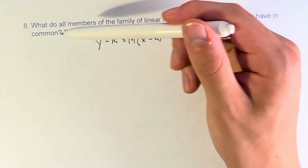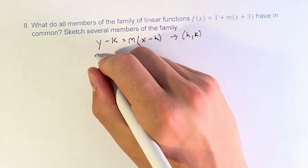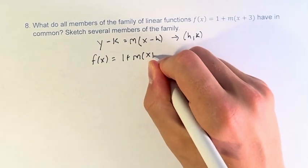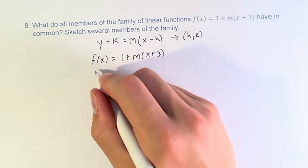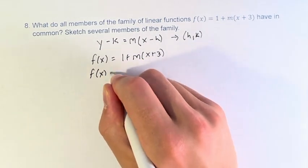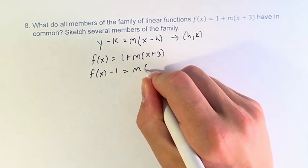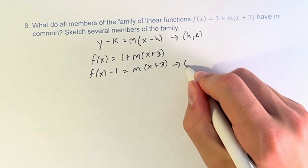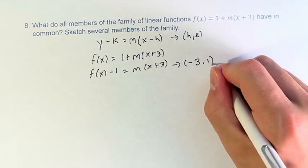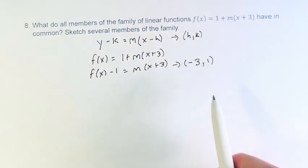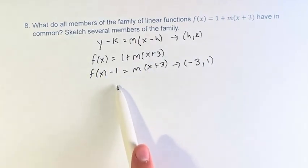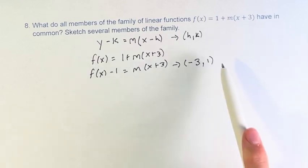So, what do all members of this family, f(x) = 1 + m(x + 3), have in common? Well, if we subtract 1 from both sides, we can see that this is in point-slope form, and therefore, the point (-3, 1) can be found for this family of functions. Every single one of them goes through this point.